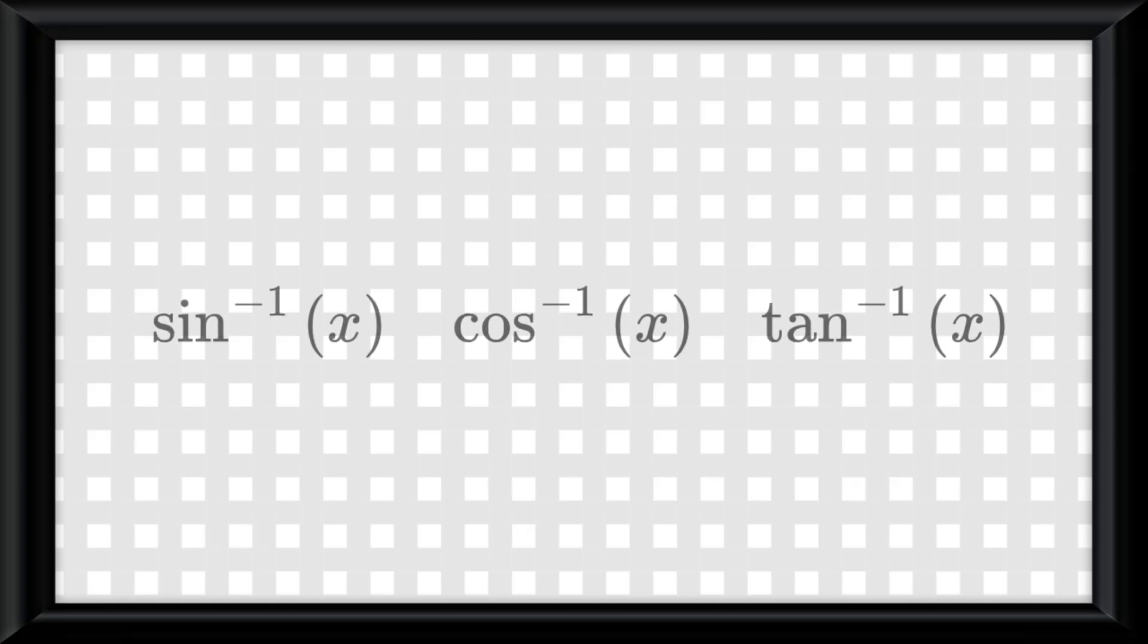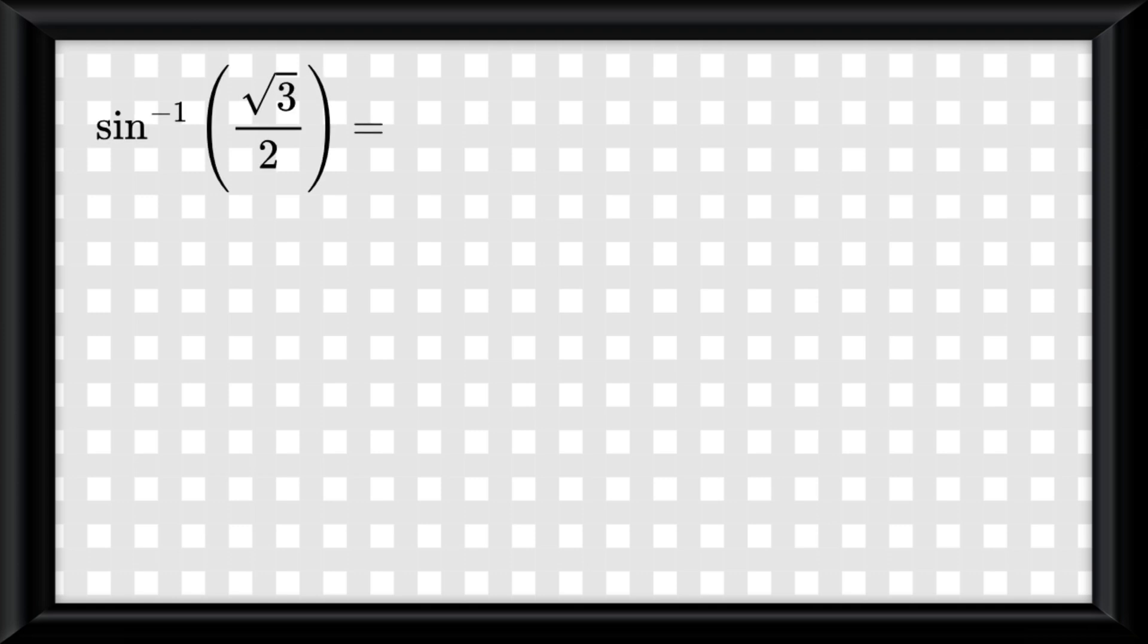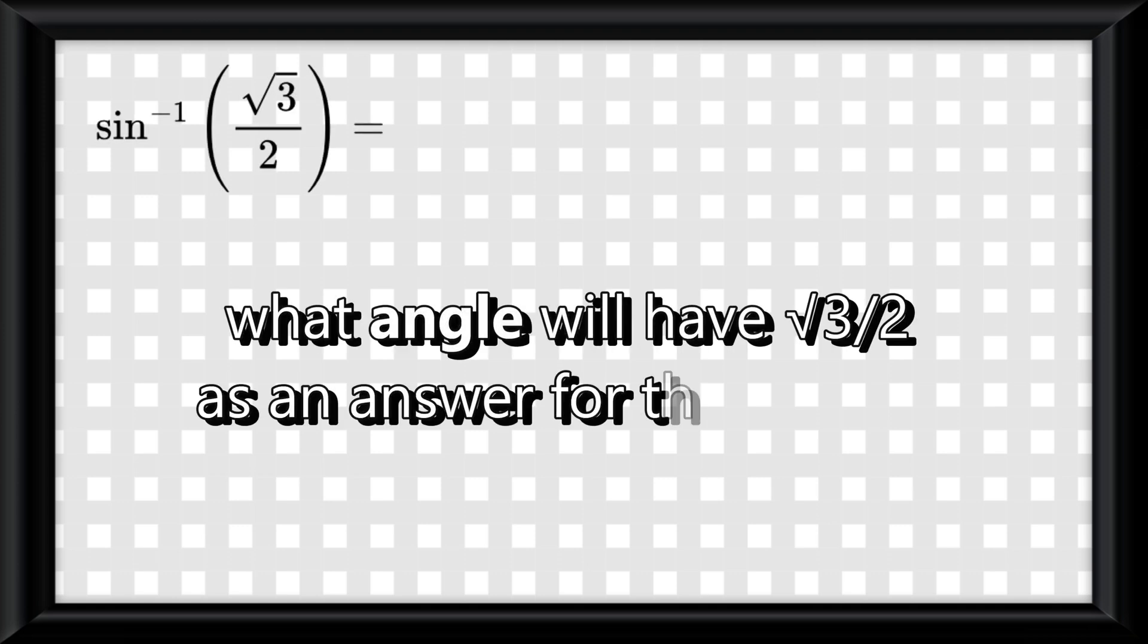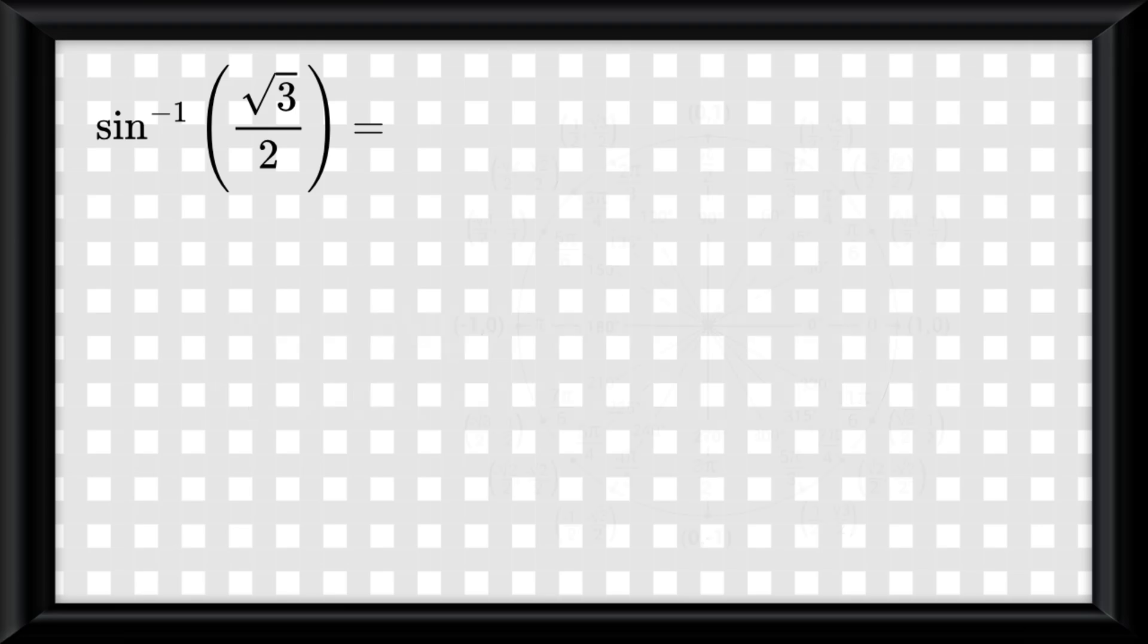Alright, a handful of other things we need to talk about. If you were given an inverse sine, cosine, or tangent equation, it's not that difficult. So for example, in this one where it's inverse sine of root 3 over 2, all it's asking is what angle will have root 3 over 2 as an answer for the sine of it. So looking at our unit circle, we see it in two places.